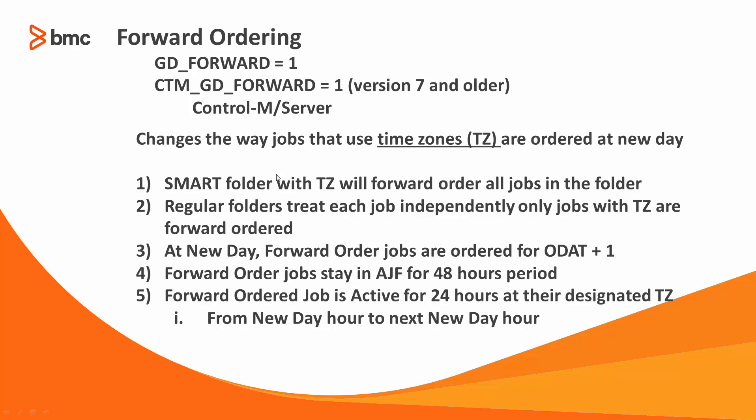In forward ordering, jobs are ordered for O-Date plus one always. For example, Sunday's new day orders folders for Monday. The 48-hour window is needed in order to be able to cover the time of all time zones. However, during these 48 hours, there is only one specific 24-hour window where these jobs are active. When the jobs are not active, they assume the state of out-of-time window.